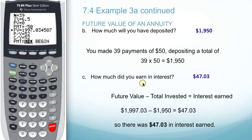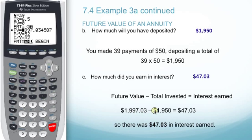To determine how much we earned in interest, we'll look at the future value, which we determined from the TVM solver to be $1,997.03, minus the deposit total, which is $1,950, to get an amount of interest earned of $47.03.